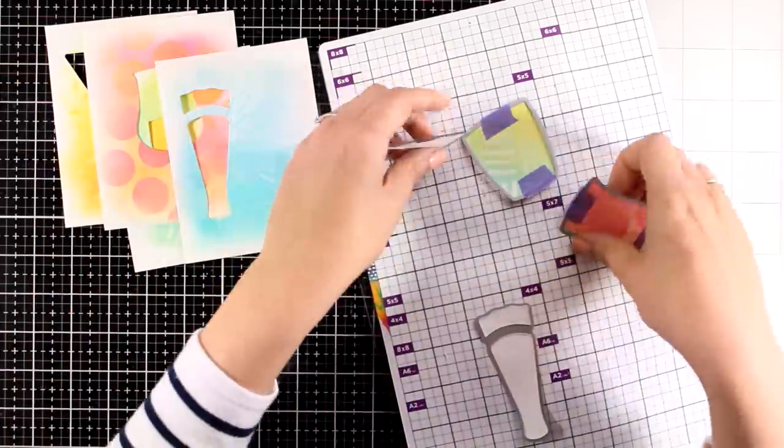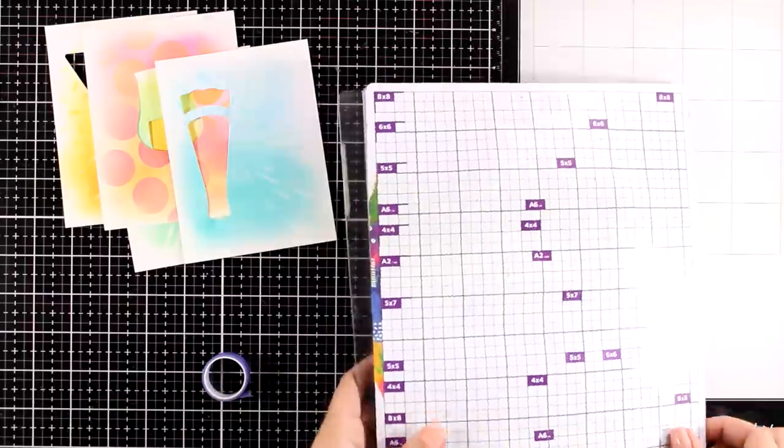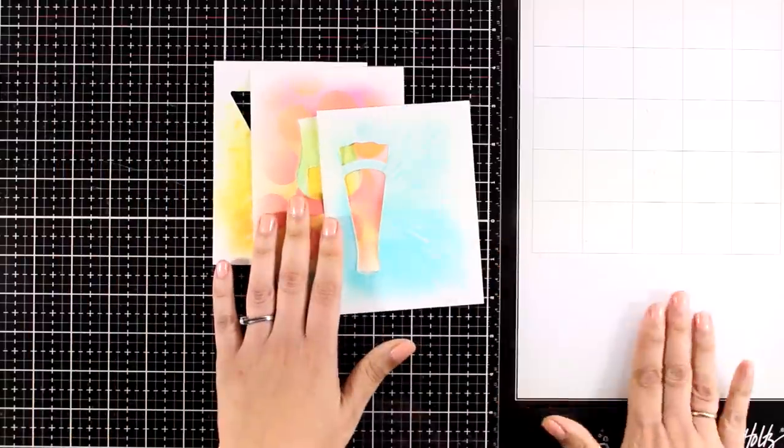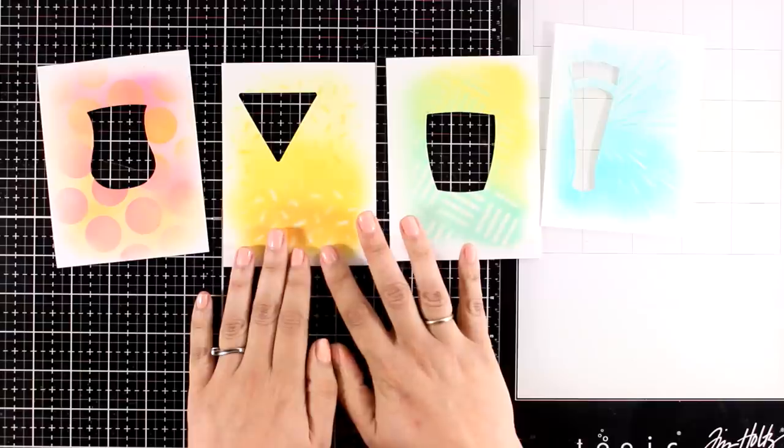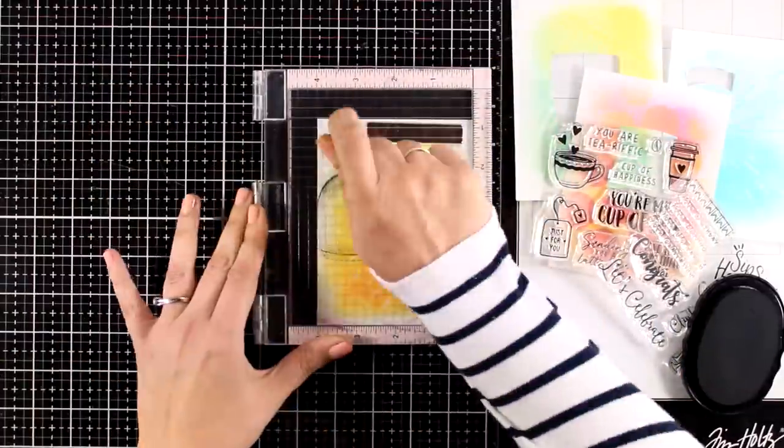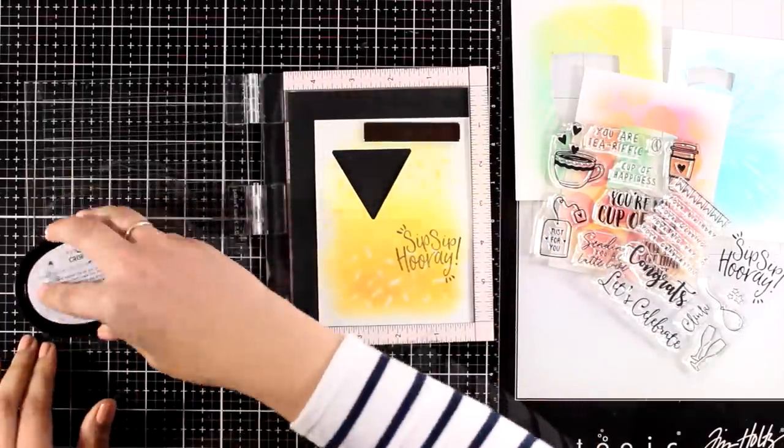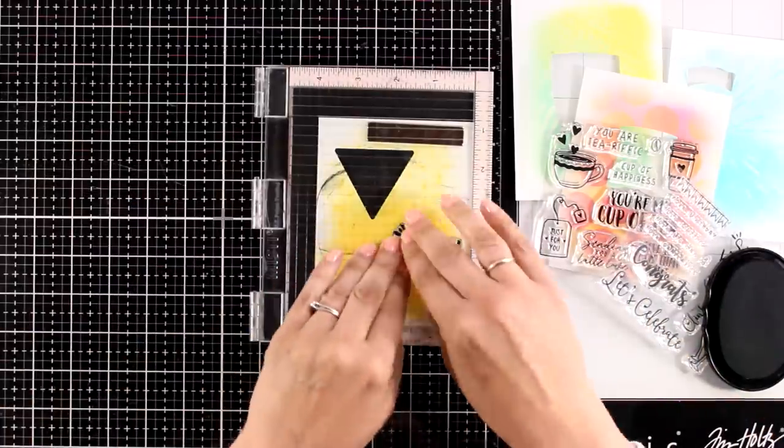And then I can run all of them together through my die cutting machine. For that I am using my Gemini just because it has a really big platform and I can die cut all four of my cards with one pass. So here are my windows and what I have up to now. And you can see that I am working on all four cards at the same time. Now it is a good idea to do the stamping on all these panels now.